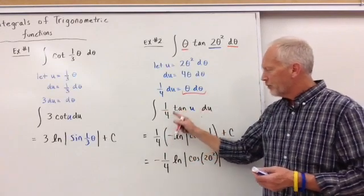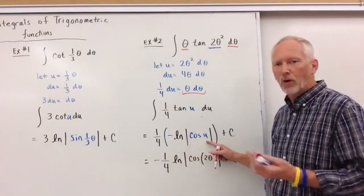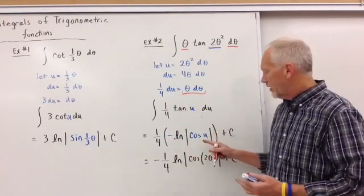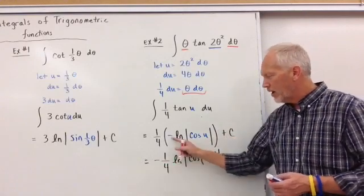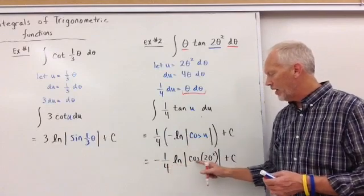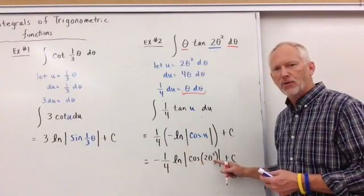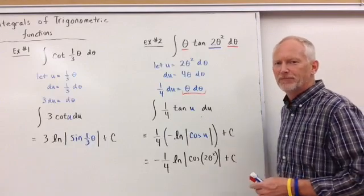And now the one-fourth will come out. Negative ln of cosine of U, according to the property that we had, absolute value, plus C, which will then give me, I'll bring this negative outside. We'll get negative one-fourth ln of cosine of two-theta squared, absolute value, plus C.